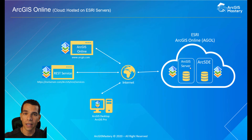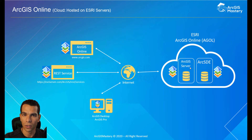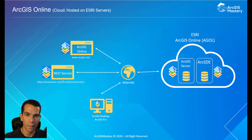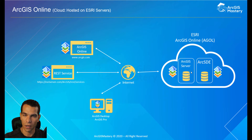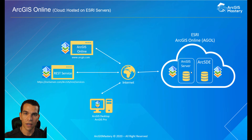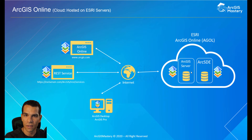ArcGIS Online is a way to manage and create maps that are hosted on ArcGIS Server managed by Esri itself. Esri created this infrastructure so the public can access the servers, create maps, share them, and have their own ArcGIS Server to work on — without needing to buy ArcGIS Server themselves. You can connect to ArcGIS Online using Desktop or Pro, or through REST services, or you can open ArcGIS Online in a browser and create your maps directly there.